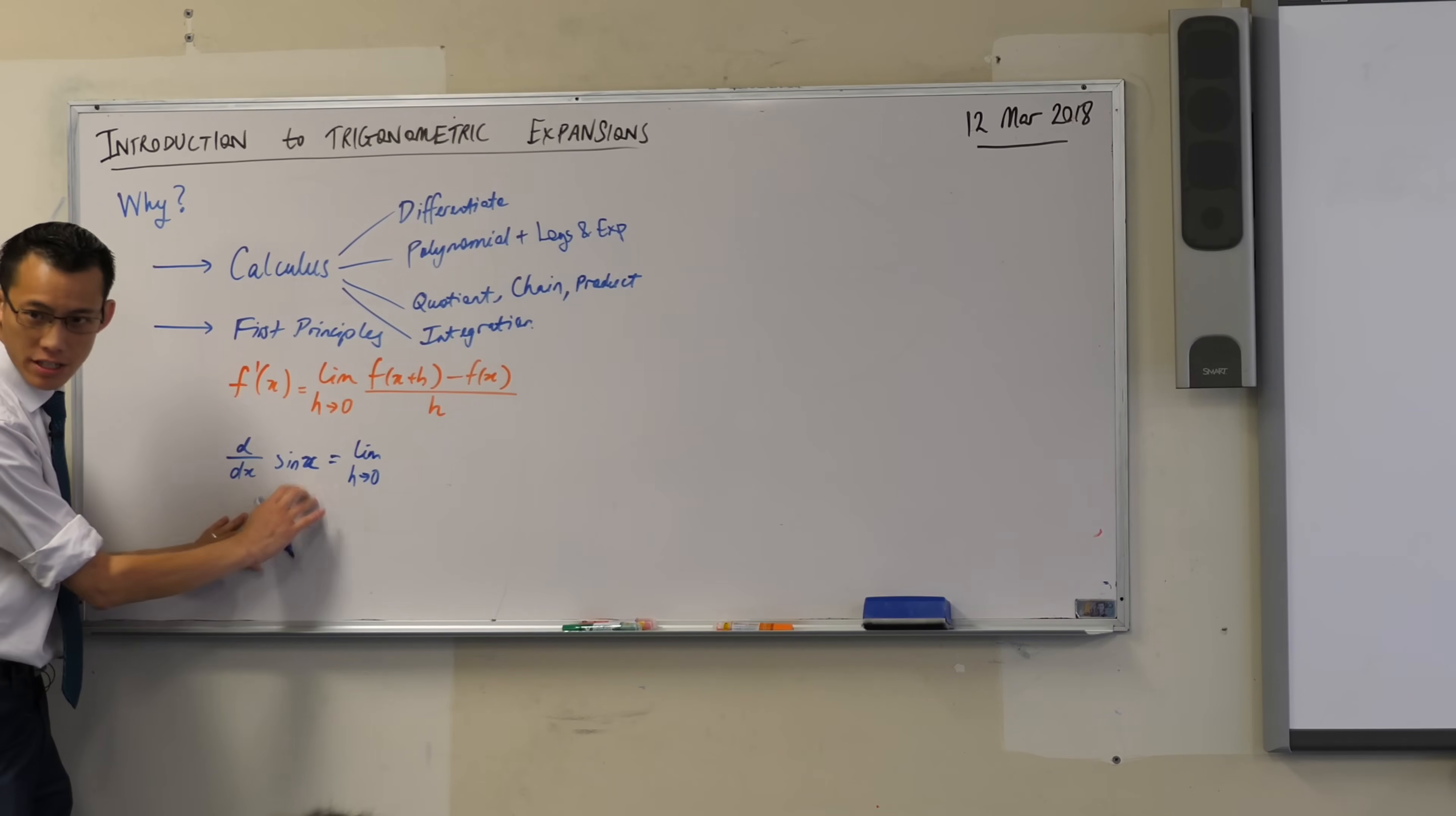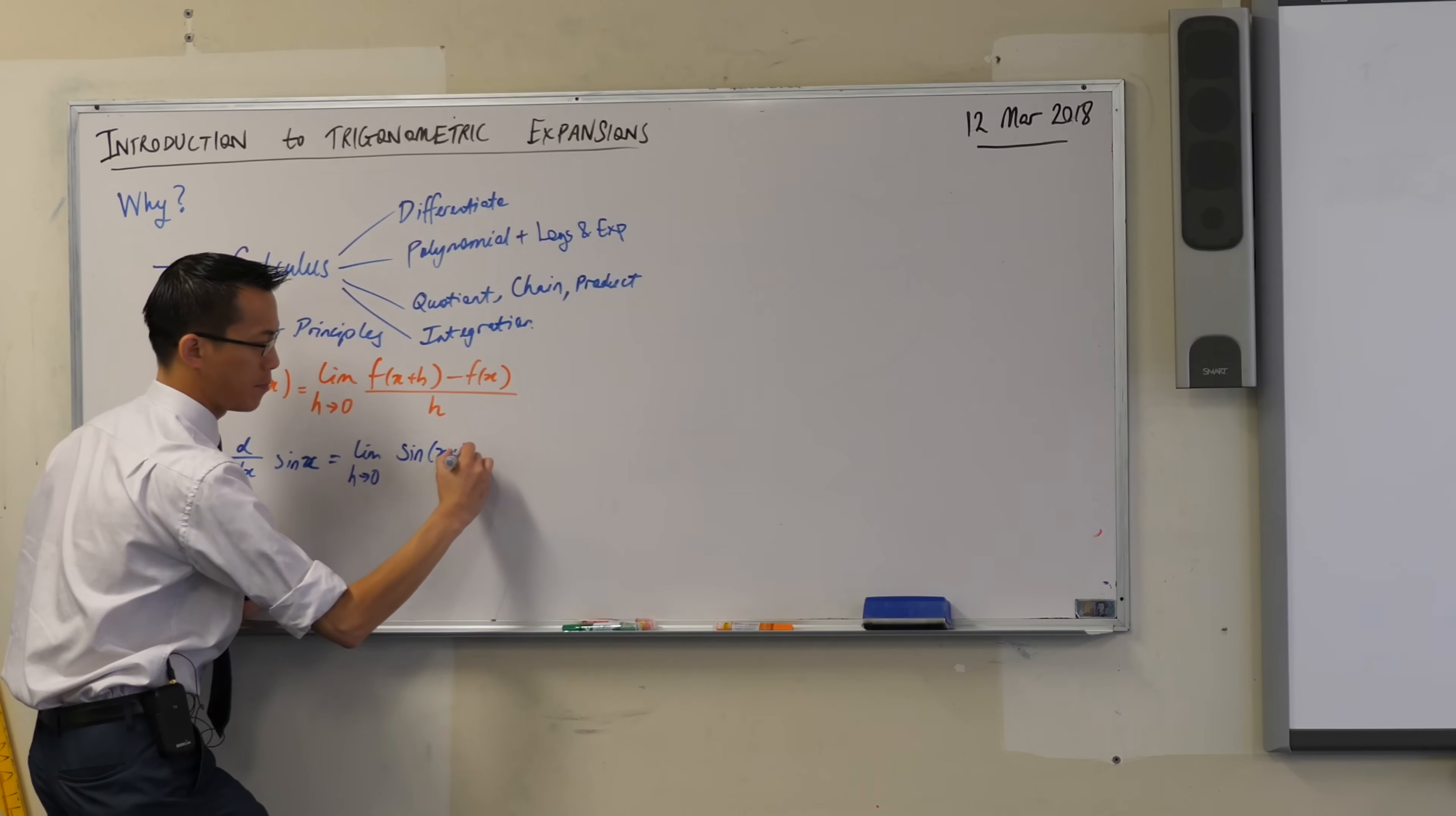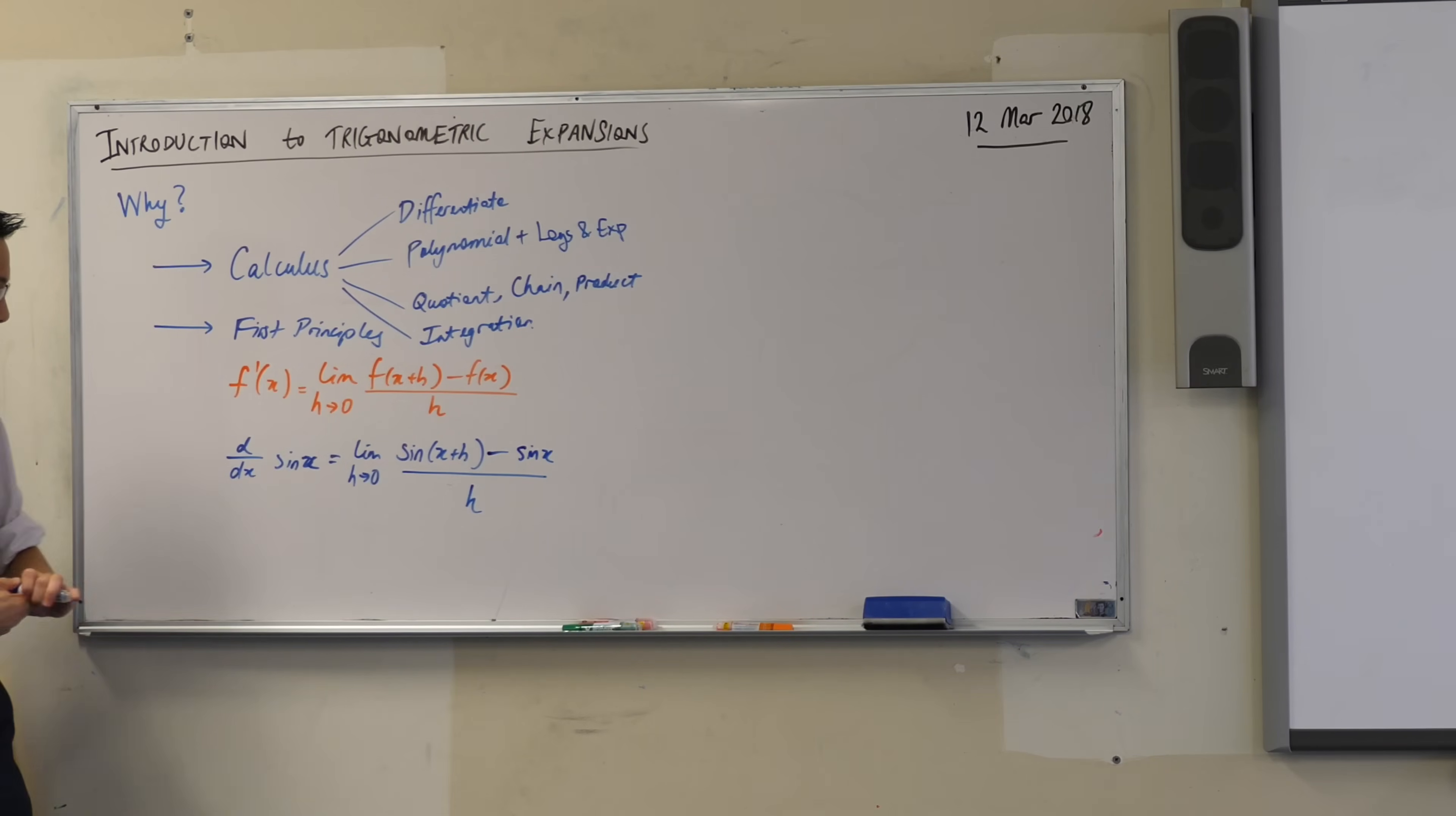Well, the function I'm interested in differentiating is sine, so instead of writing f of x plus h, I will write sine of x plus h. You with me? That's just the particular f that I'm looking at. Minus what's on the end here? Just sine x, and then you're dividing by h, because you're always dividing by h.